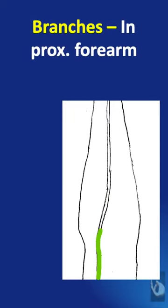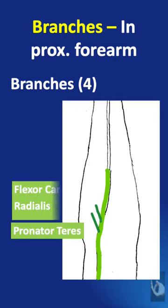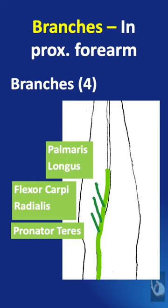In the proximal forearm, the median nerve gives off four motor branches: branches to pronator teres, flexor carpi radialis, palmaris longus, and the flexor digitorum superficialis.